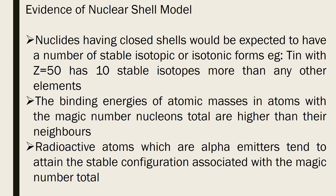Several experimental evidences prove the nuclear shell model and correlate magic numbers with shell structure. The first evidence is that nuclei with closed shells — that is, with neutron or proton numbers of 2, 8, 20, 50, 82, or 126 — have more stable isotopic or isotonic forms. For example, tin with Z = 50 has 10 stable isotopic forms, more than any other element.